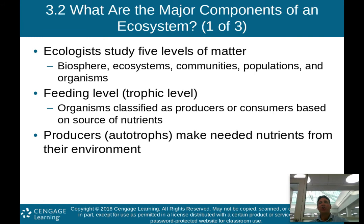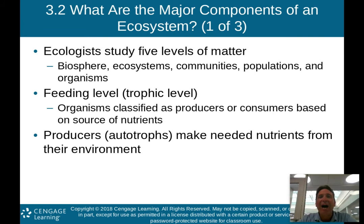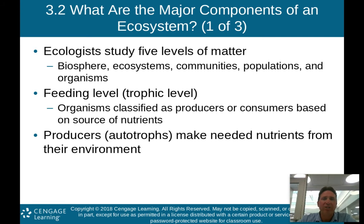So what are the major components of an ecosystem? Ecologists study five levels of matter: biosphere, ecosystems, communities, populations, and organisms. These are listed from big to small. The biosphere is where all life is. Ecosystems are certain systems within the biosphere.